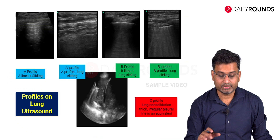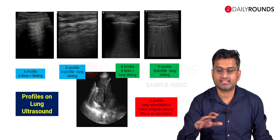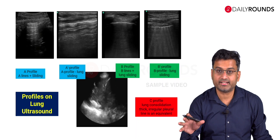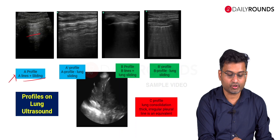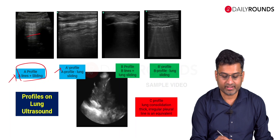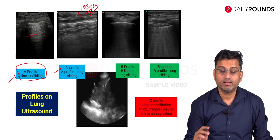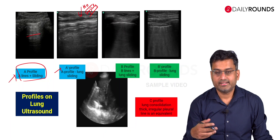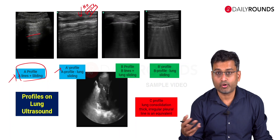Based on these various lung patterns, the BLUE protocol was described. In the BLUE protocol, we classified lung aeration patterns into various abnormalities. The A profile is when you have normal A lines along with lung sliding, which is usually considered healthy. The A prime (A') profile is when you have an A profile but there is no lung sliding — this should alert you to the possibility of pneumothorax. It can also happen with endobronchial intubation or ARDS with very poor lung compliance, but pneumothorax would be high on your differentials.